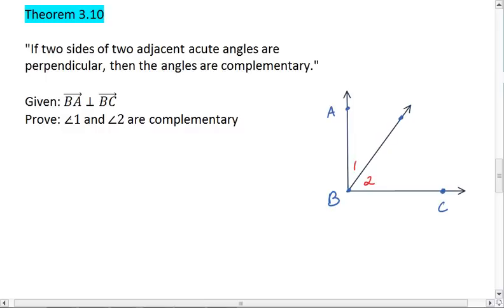Theorem 3.10 tells us that if two sides of two adjacent acute angles. OK, so the acute angles are 1 and 2, and their sides are BA and BC.